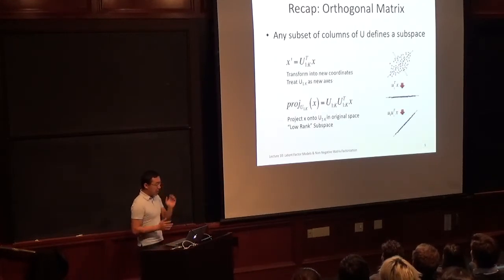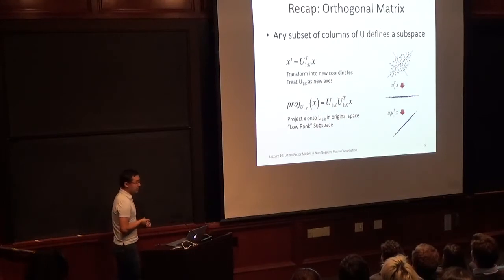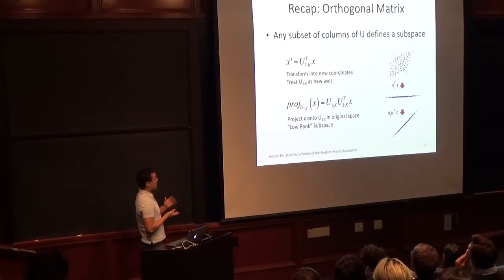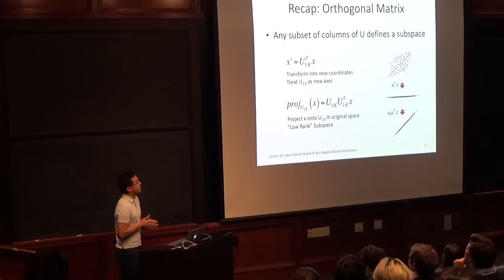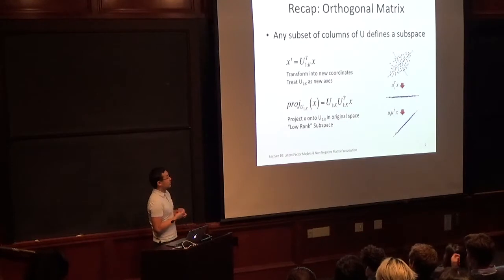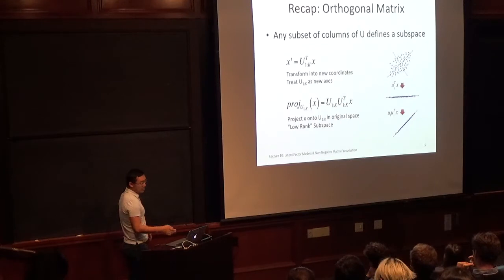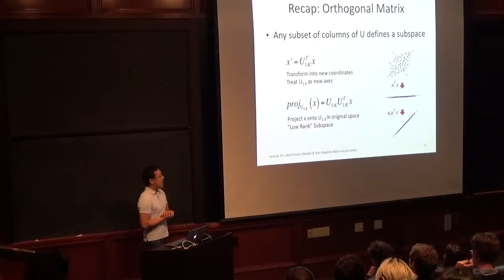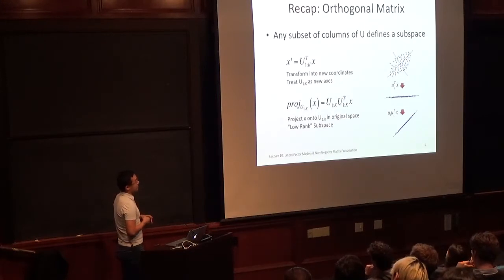Any subset of the columns of U defines a subspace. In particular, if we take the first K columns of U and multiply by a data vector X, we get a new X' that is lower dimensional — only K-dimensional as opposed to the original dimensionality. The figure on the right shows an example going from two dimensions to one dimension, where K equals one.